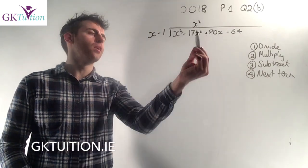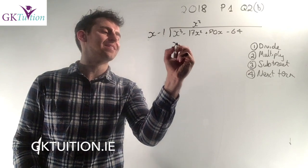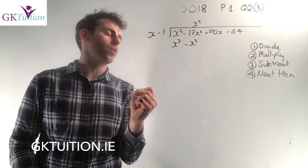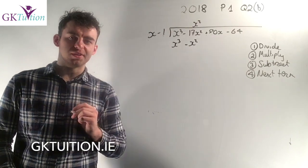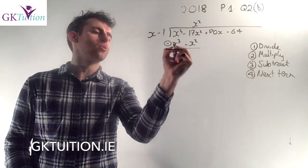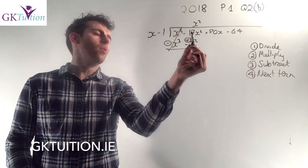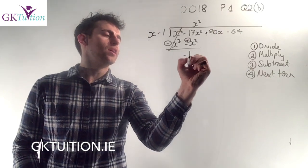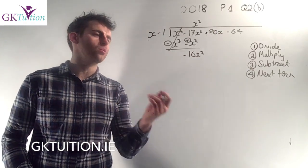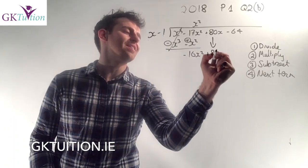My second step is multiply, so I multiply x squared by each of these terms. x squared by x is x cubed. x squared by minus 1 is minus x squared. My third step is to subtract, and in order to subtract you have to change your signs. So this becomes a minus, this becomes a plus. My x cubed will cancel out and then I have minus 17 plus 1 gives me minus 16 x squared. And the fourth thing we do is we take down the next term which in this case is plus 80 x.